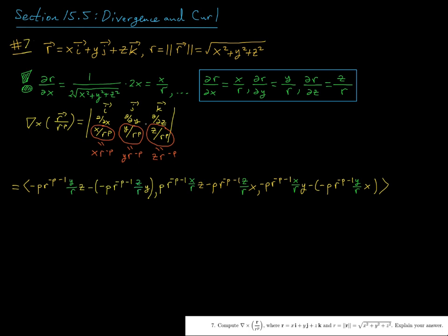Okay, see now for the other term in the determinant, we're going to subtract the z derivative of y times r to the negative p. And so we get negative p times r to the negative p minus one times the z derivative of r—that's from the chain rule—so we get a z over r, and then we have that y which is constant with respect to this z derivative.